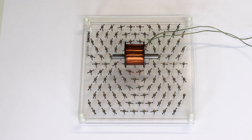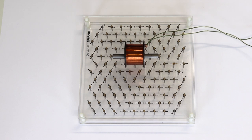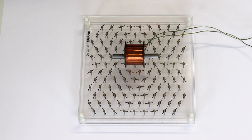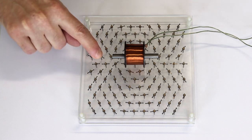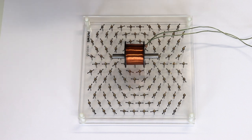I'm going to switch the current off, back on. Now note the direction of small compass needles. Now the arrows are pointing towards the coil.